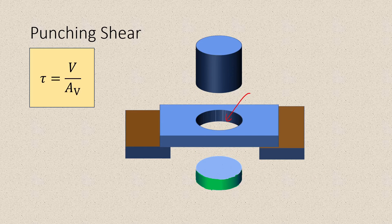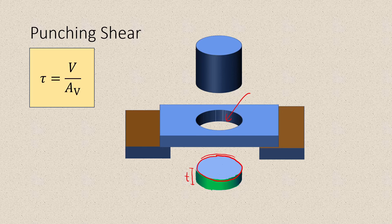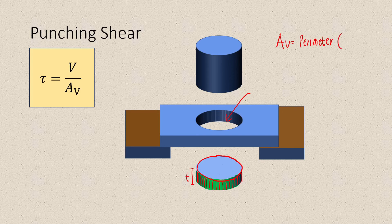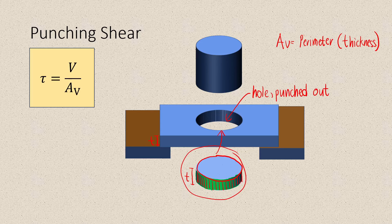This is the hole punched from the sheet, and our shear area is the one colored in green. Note that this area can be obtained by getting the perimeter of the circle multiplied by the thickness of the sheet. So the perimeter times the thickness accounts for this area — that is the area we'll consider in punching shear. To generalize: AV equals the perimeter of the cross section multiplied by the thickness of the plate or metal sheet being punched.